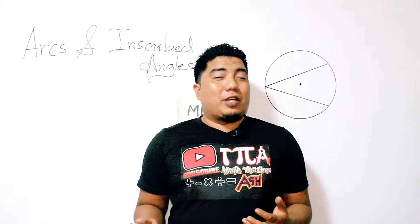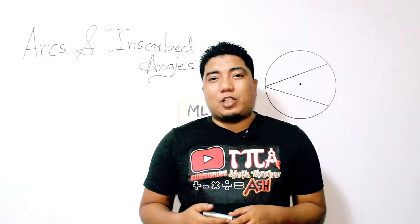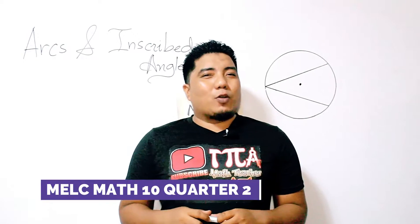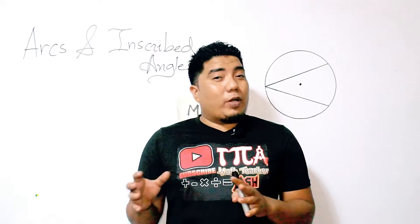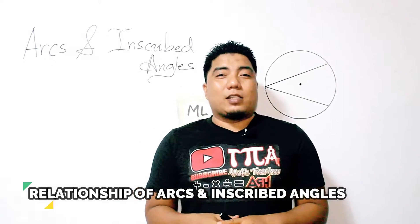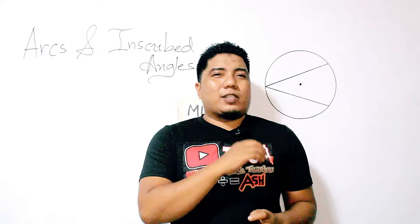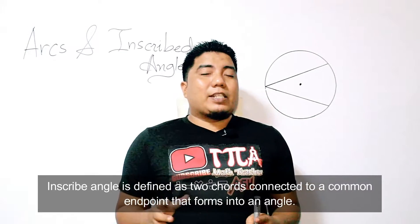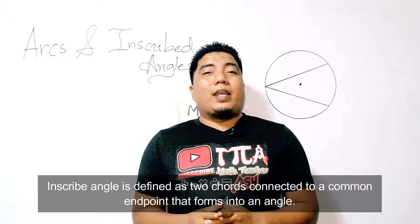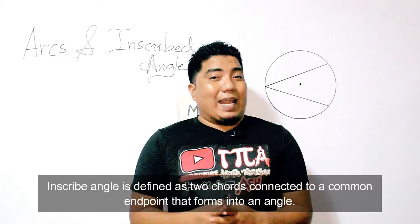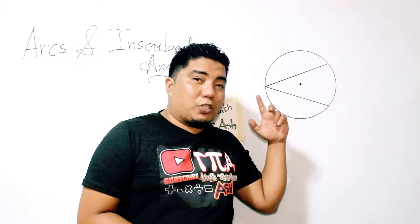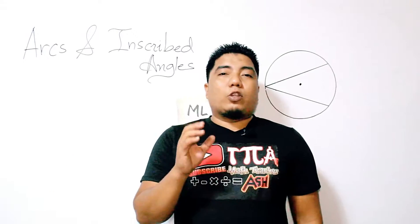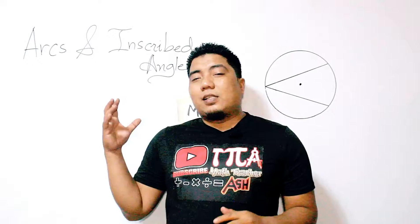Welcome to another session here in Math Learning with Sir Ash. This is still your free access math teacher Ash, and today we're going to discuss the most essential learning competency-based lesson for quarter 2 of grade 10 mathematics, which is all about the relationship of arcs and inscribed angles. An arc is a part of the circumference of the circle. An inscribed angle is defined as two chords that connect at a common endpoint, which forms an angle, and that point lies on the circle.